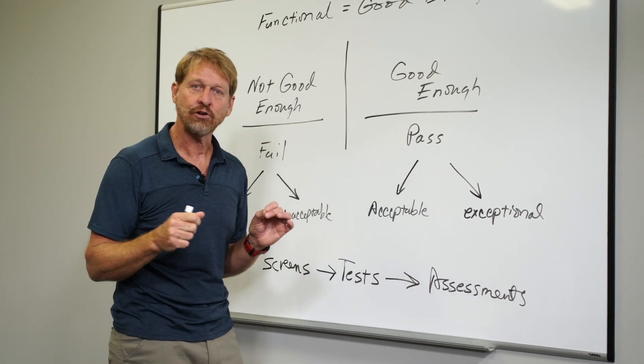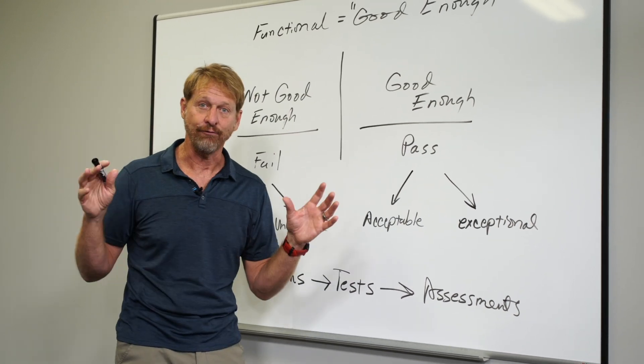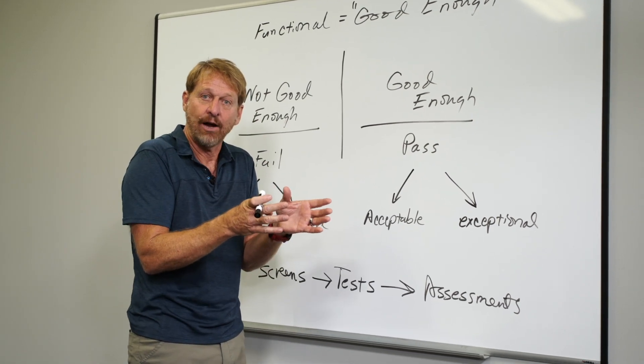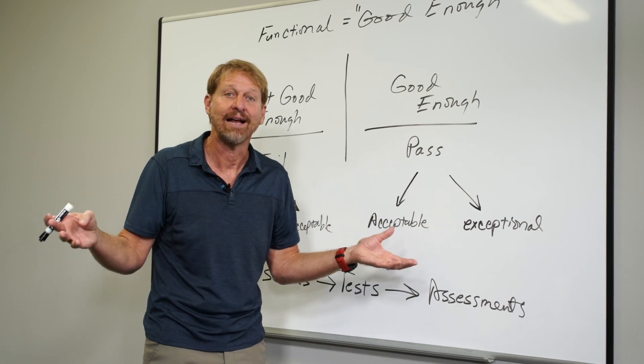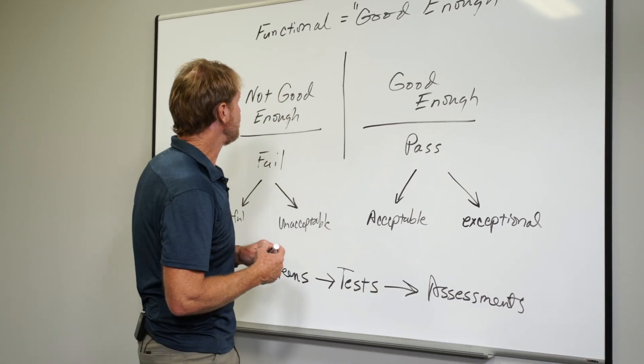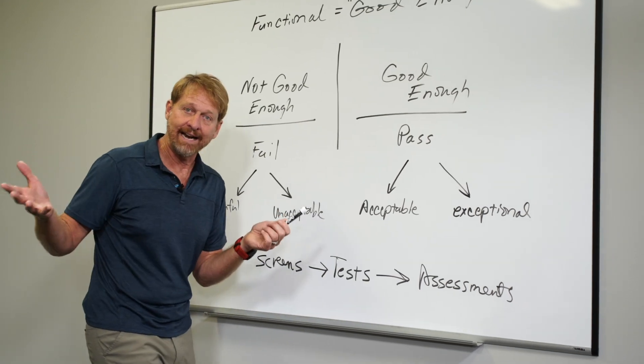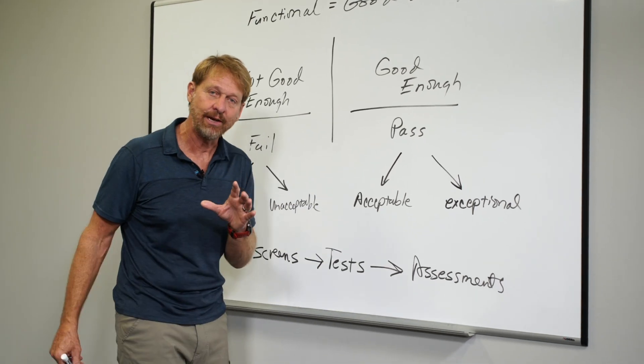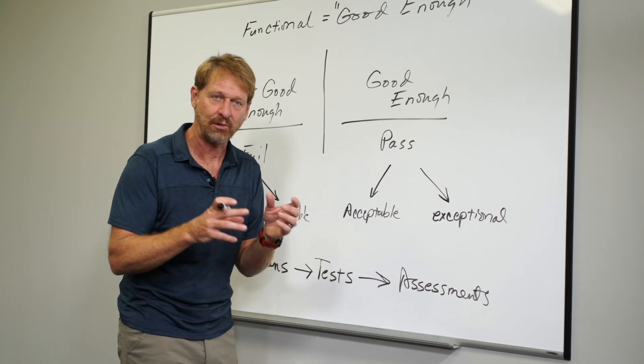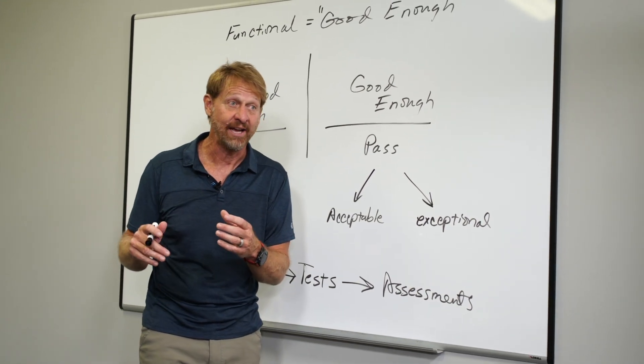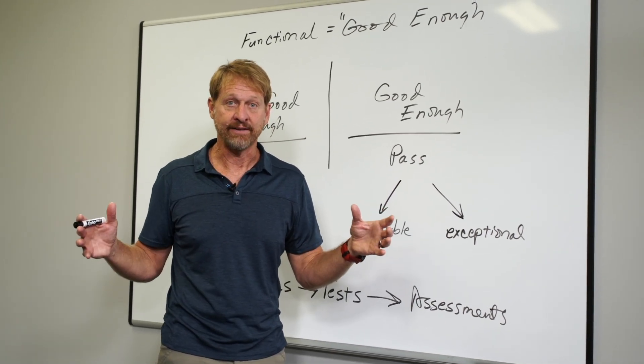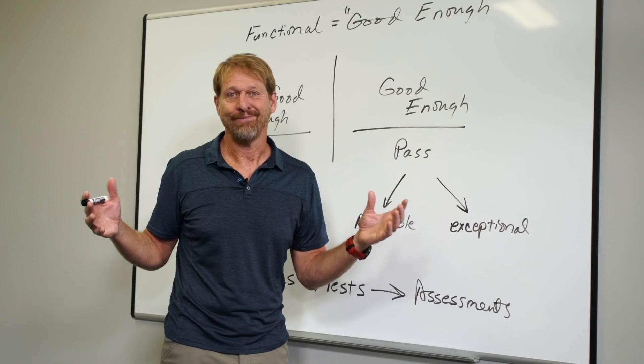So the very first thing we got to do in the not good enough world is point the goals at that weakest link because it controls the rest of the system and everybody's got maybe a different weak link. So when we got into movement screening, the very first thing we had to do is not relate a movement screen to sports, particular activity, or an age group. We said, what is the signature of human movement that's not good enough?